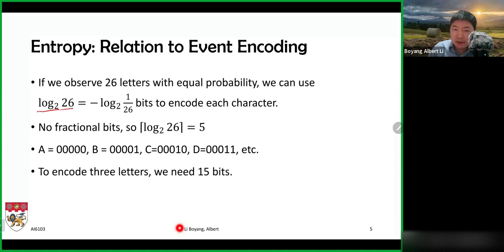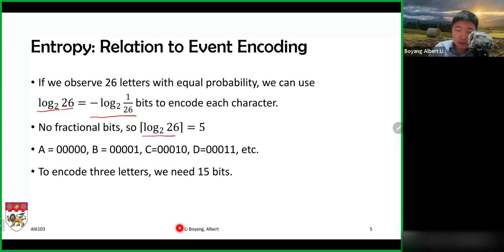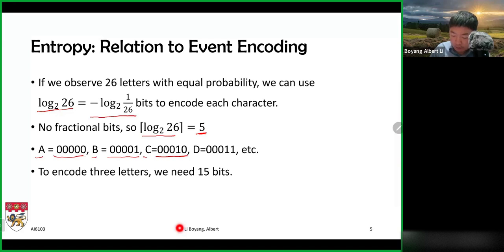Assuming the letters appear with equal frequency — equal probability — the minimum number of bits required to encode each letter is log base 2 of 26. This tells you how many bits you need to encode 26 distinct possibilities. This is equivalent to negative log base 2 of one over 26. Since you can't use half a bit, you round up with the ceiling operation, giving you five bits. So to encode A, you could use five zeros; B is number one; C is number two in binary, and so on.